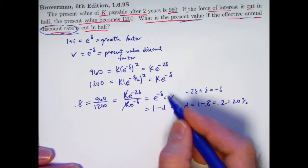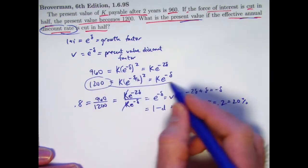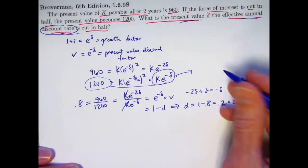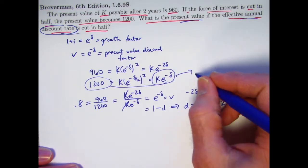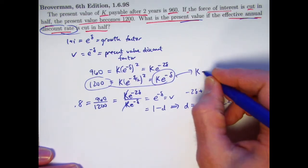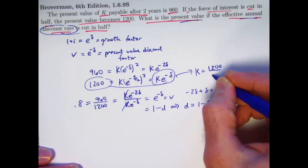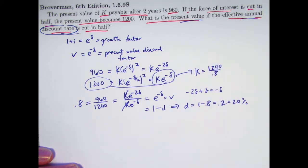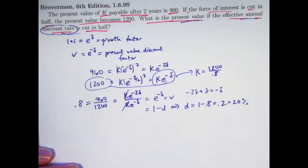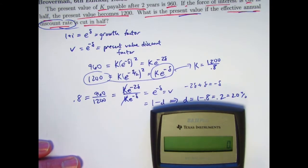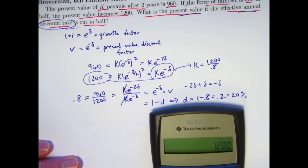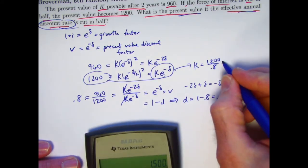We can take this value of e to the negative delta, plug it back into this equality here to find K. K is going to be 1200 divided by 0.8, which ends up equaling, let's see, 1200 divided by 0.8 equals 1500, yes. K is 1500.